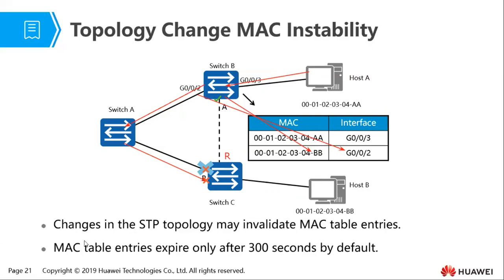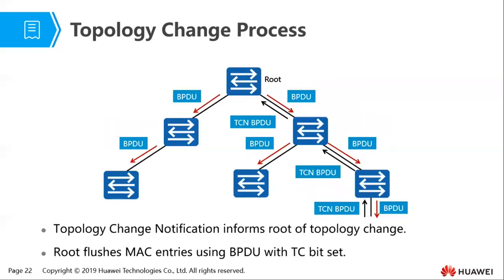After every 300 seconds, we delete entries that have stayed for more than 300 seconds in our MAC address table, in order to reduce the chances of MAC address instability caused by an indirect link failure.